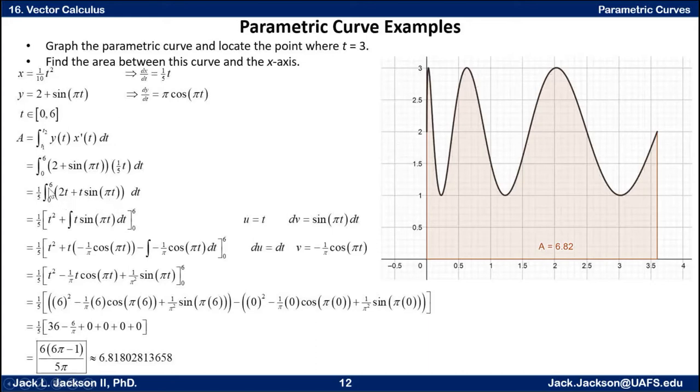I can factor the one-fifth all the way out front of the integral. I'm going to distribute the t, so this is 2t plus t times sine of pi t. Ultimately I'm going to be evaluating from 0 to 6 the antiderivative of this thing. I'm going to break that into two antiderivatives. The antiderivative of 2t is easy, that's just t squared. The derivative of t squared is 2t. This one's a little harder, but it is an integration by parts problem.